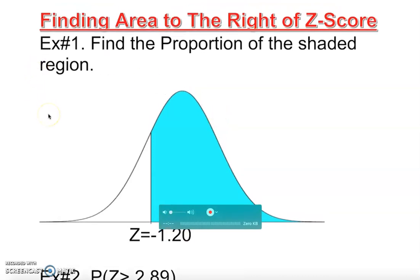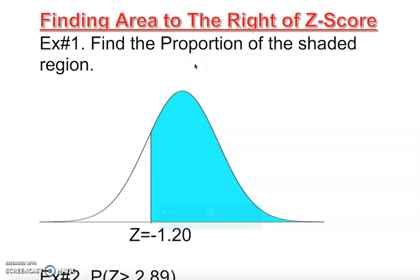Last video we learned how to find the area to the left of a z-score. This video we'll learn how to find the area to the right of a z-score. We need a little extra information: area to the left you just go to the z-table and get the area. Area to the right is one minus the area to the left of z — this is something we have to note.